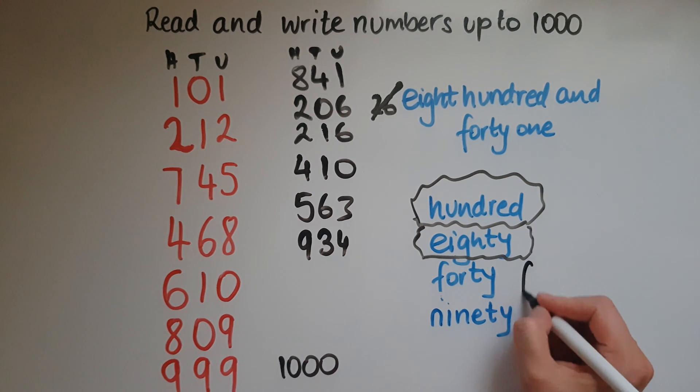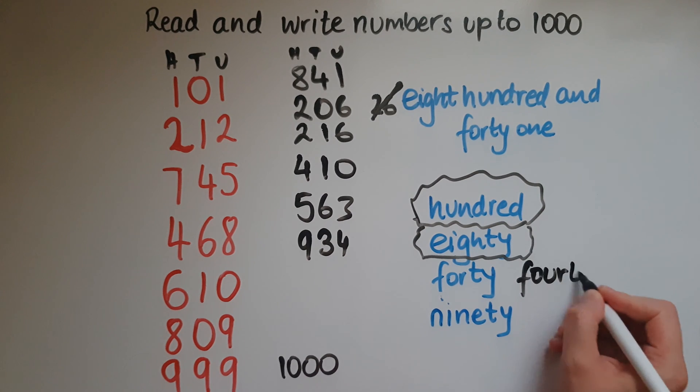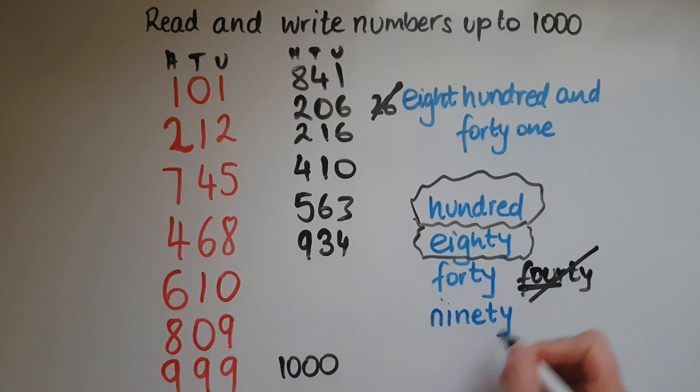So we don't write it as fourty. That's how you write four but forty is not written like that. It's written without a U. So forty and ninety, because some people confuse this as well. They leave out the E. So that's how we write ninety as well.